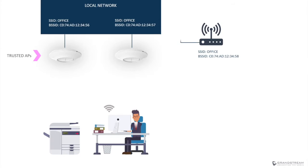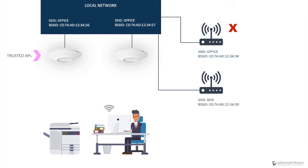Any access point that is added to the network and is not managed by the controller, or is not added to the list of trusted APs, will be detected as a rogue AP and a countermeasure policy will be applied to prevent clients from connecting to it. Oftentimes employees install a rogue access point to have unrestrained Wi-Fi access for personal devices, usually with no authentication or encryption, which poses a security threat. Rogue AP detection on GWN 7600 series will detect such access points and prevent clients from connecting to them.